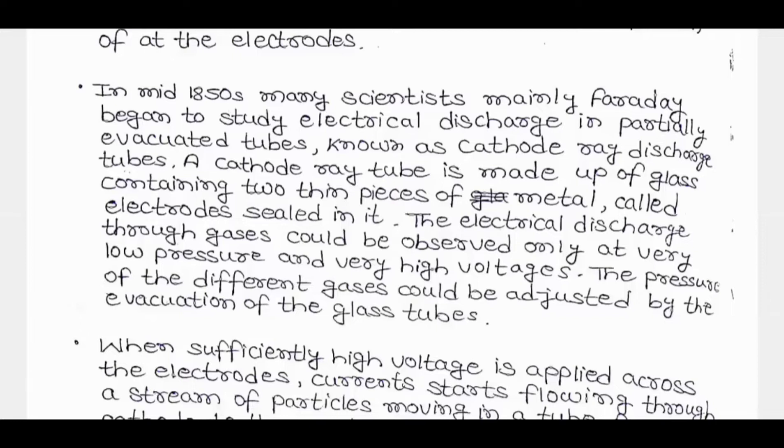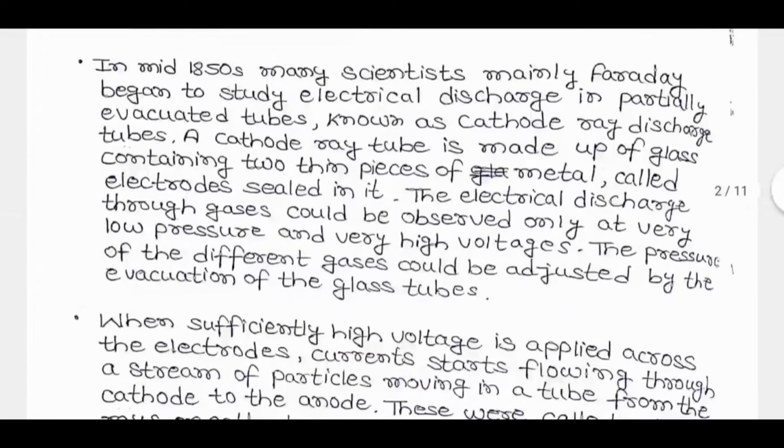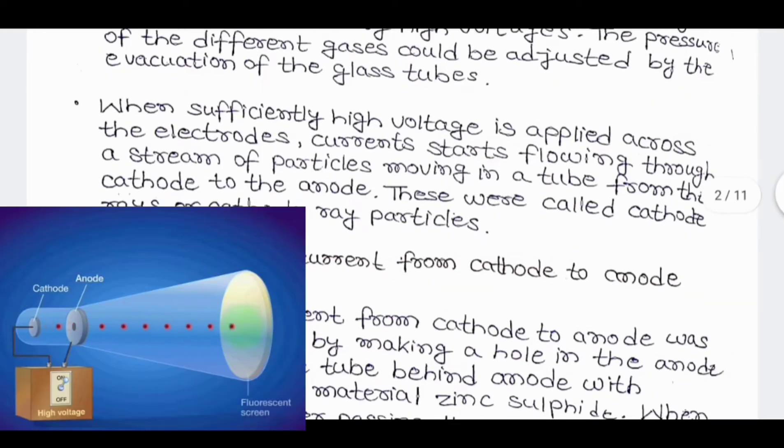A cathode ray tube is made up of glass containing two thin pieces of metal called electrodes sealed in it. The electrical discharge through gases could be observed only at very low pressure and high voltages. The pressure of different gases could be adjusted by the evacuation of the glass tubes. When sufficiently high voltage is applied across the electrodes, current starts flowing through a stream of particles moving in the tube from the cathode to the anode.